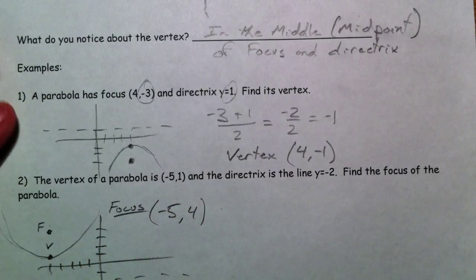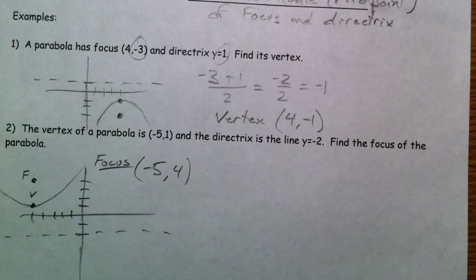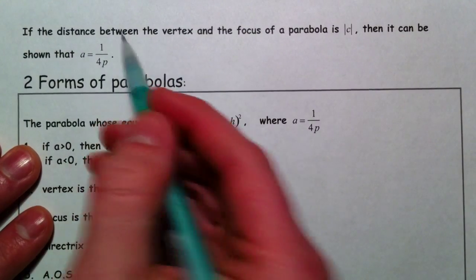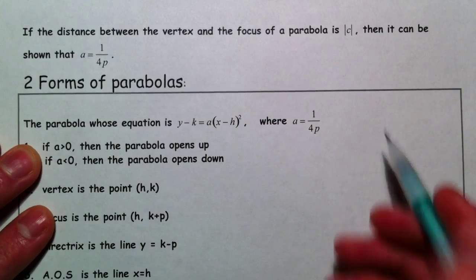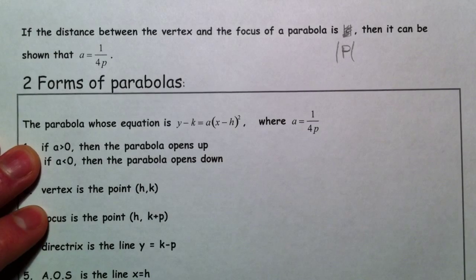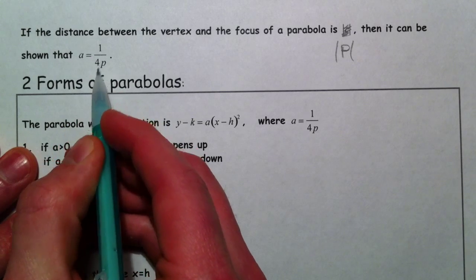So really it's all relative placement for it. So let's talk a little more detail about how all of these equations look. So if the distance between the vertex and the focus of a parabola is, let's call this p. I'm going to use the p to represent the distance to the focus. Then it can be shown that a is equal to 1 over 4p.